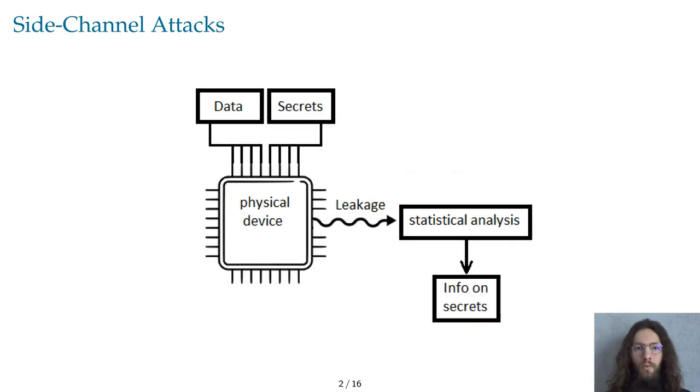As you surely know, real-world devices can leak some information about the operations they perform through their power consumption or electromagnetic leaks, for example. This leakage can be used, sometimes with the help of statistical analysis, in order to gain some knowledge about the secrets handled by the device. There are two main ways to deal with these attacks called side-channel attacks: one solution would be to reduce the amount of information that leaks,